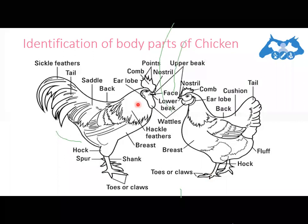For chicken, there are some easily identifiable differences. There is the comb, the wattles — the lower hanging portion — the beak, the eyes, and the earlobes on both sides. The back is very short and curvy, and at the near end of the back there is a saddle. The tail feathers in the case of a rooster are sickle feathers.